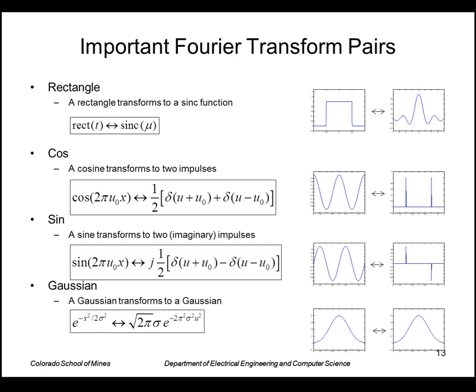Some important Fourier transform pairs. We've already seen the rectangle transforms to a sinc. A cosine transforms to two impulses. A sine transforms to two impulses but in the imaginary domain. And a Gaussian transforms to a Gaussian.